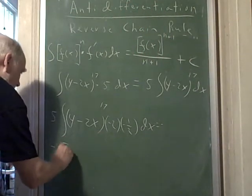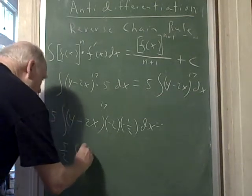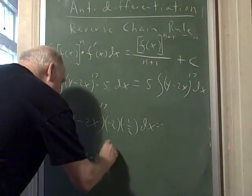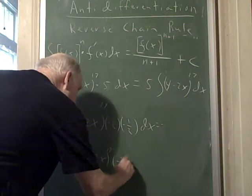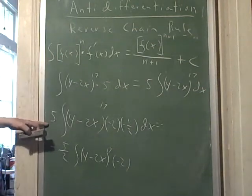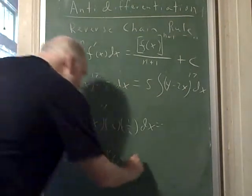Negative 5/2 times the antiderivative of 4 minus 2x to the 17th power times negative 2. Notice I brought the negative 1/2 out, 5 times negative 1/2 is negative 5/2 dx. Now I've got what I want, right?